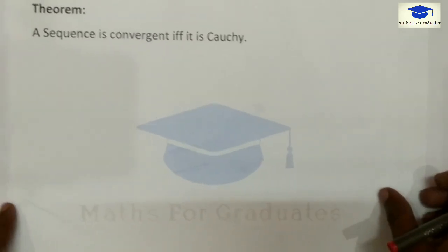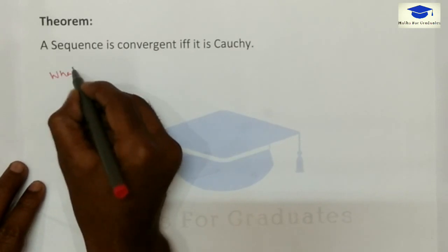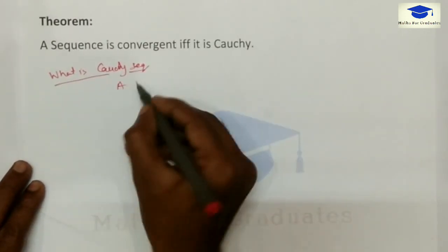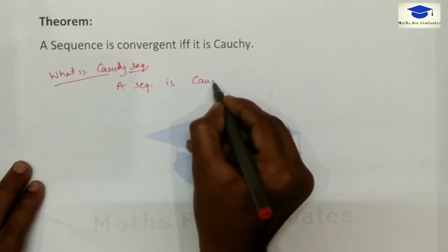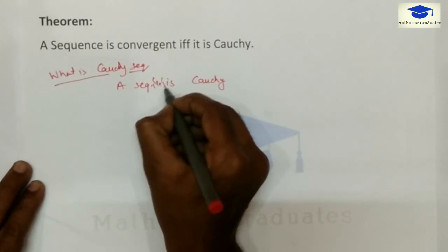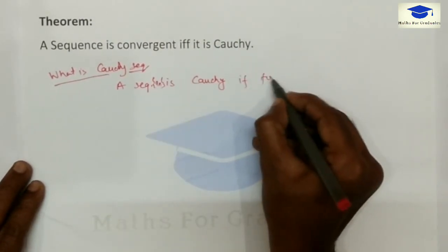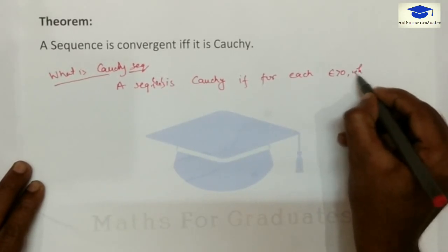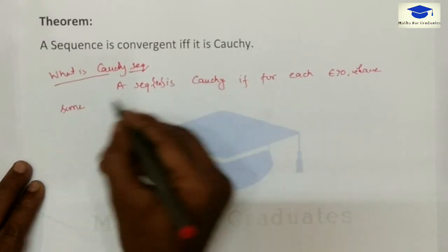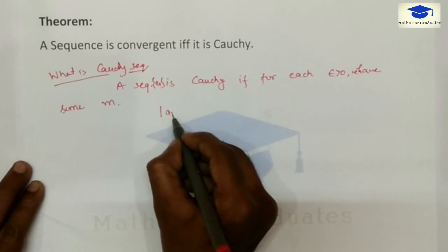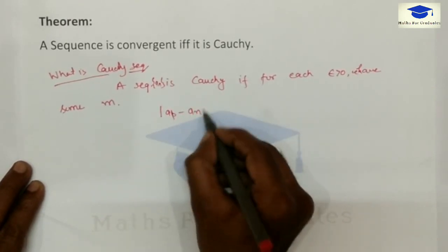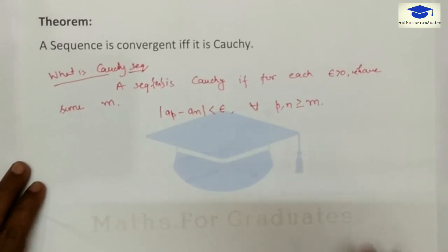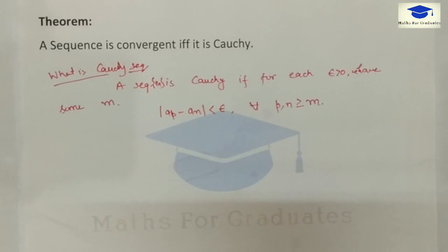First we recall the definition of the Cauchy sequence. A sequence a_n is Cauchy if for each positive epsilon, there exists some natural number m such that the distance between the a_p term and a_n term is less than epsilon, for all p and n greater than or equal to m.